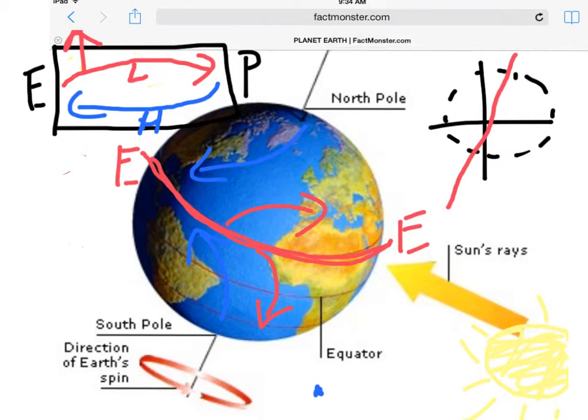But the cold, high pressure, high density air from the poles is sinking and flowing back towards the equator in the same way. So this is showing how global convection works on Earth.